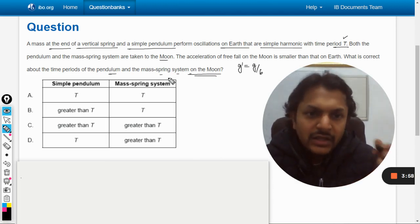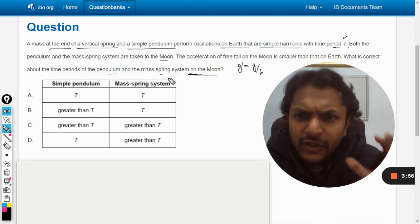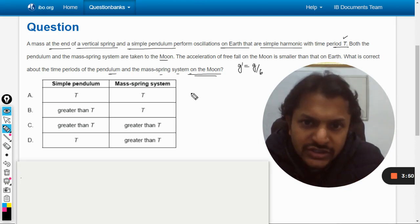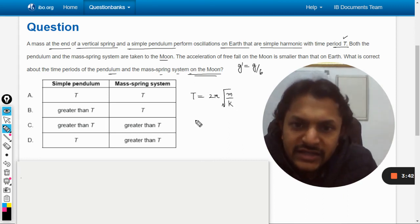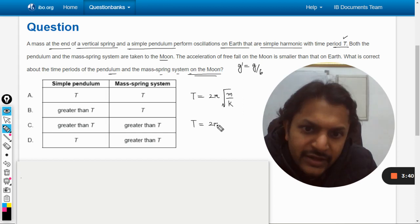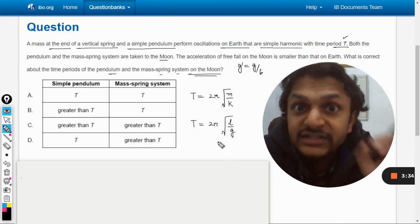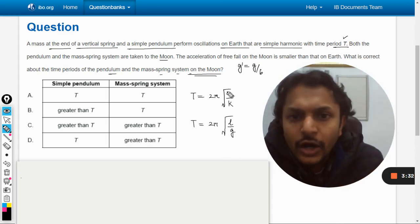Okay, so we know that there are two formulas in the data booklet. The time period in the case of spring is given by 2π root of m by k, and in the case of pendulum it is given by 2π root of l by g. These are the two formulas. They are present in the data booklet, you can see that.